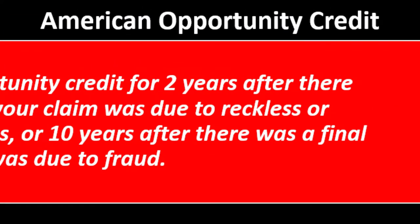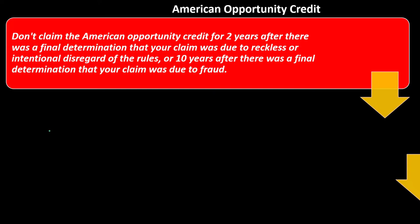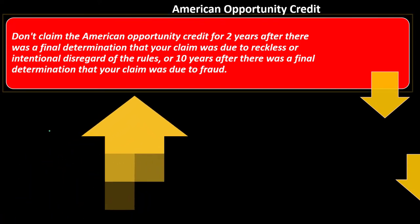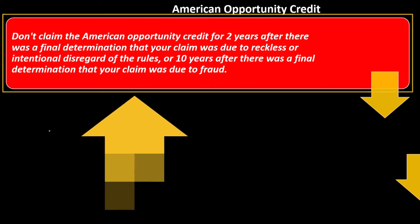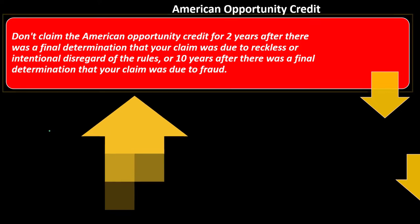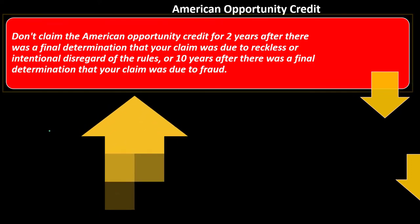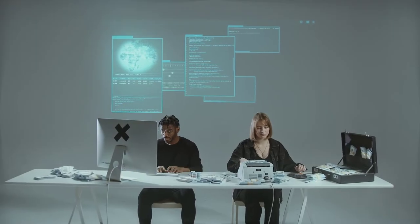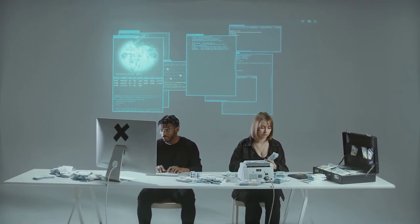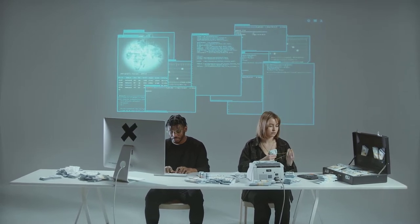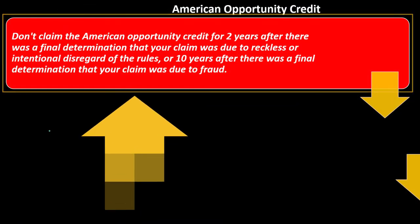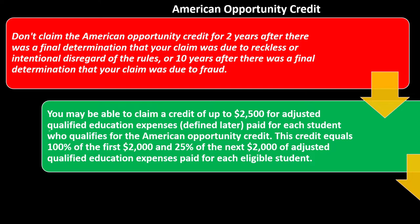We're going to focus on the American Opportunity Credit. Don't claim the American Opportunity Credit for two years after there was a final determination that your claim was due to reckless or intentional disregard of the rules, or 10 years after a final determination that your claim was due to fraud. The IRS is trying to deter fraud by removing the ability to take the credit if abuse was involved.